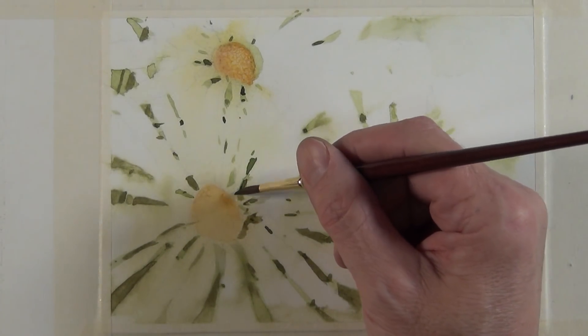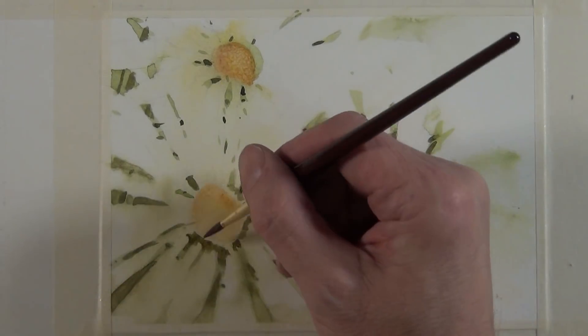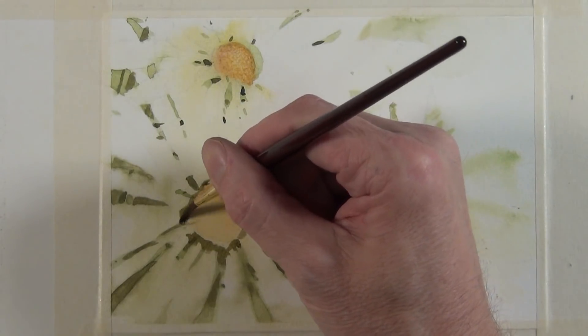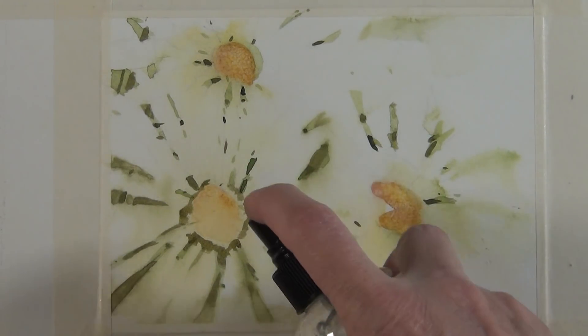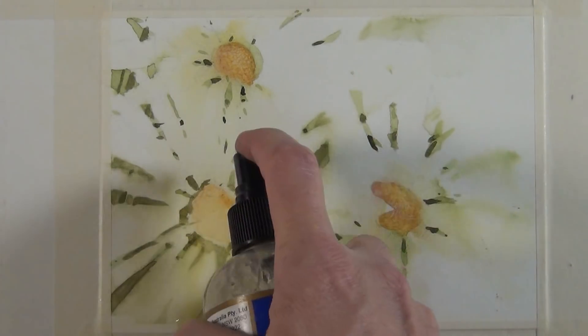Now I'm going to take some more of the sap green and just lay some pigment down. And I'm going to come back in and hit that area with a spray to help soften and diffuse the edges on the marks I made.